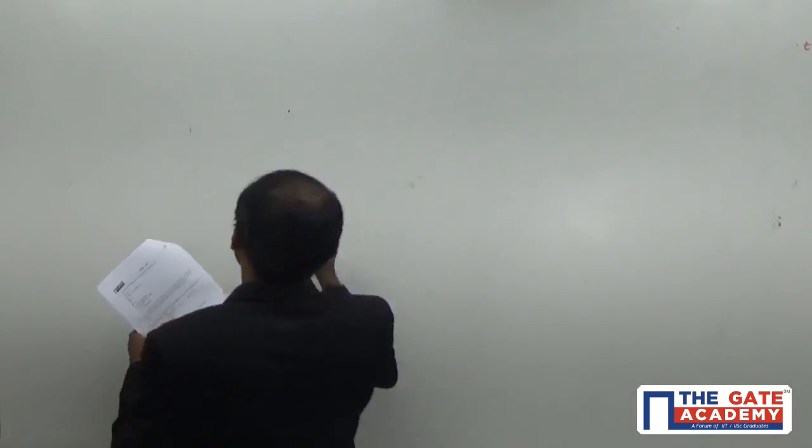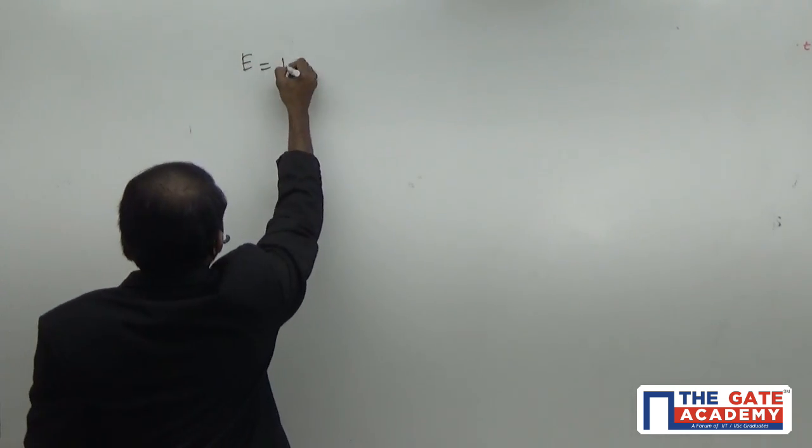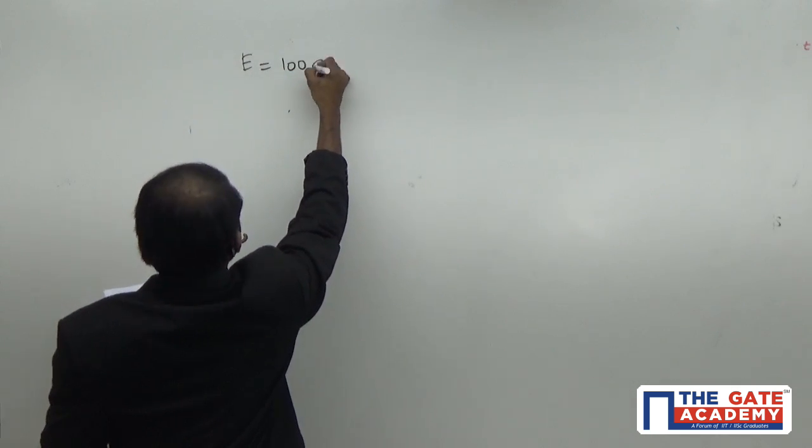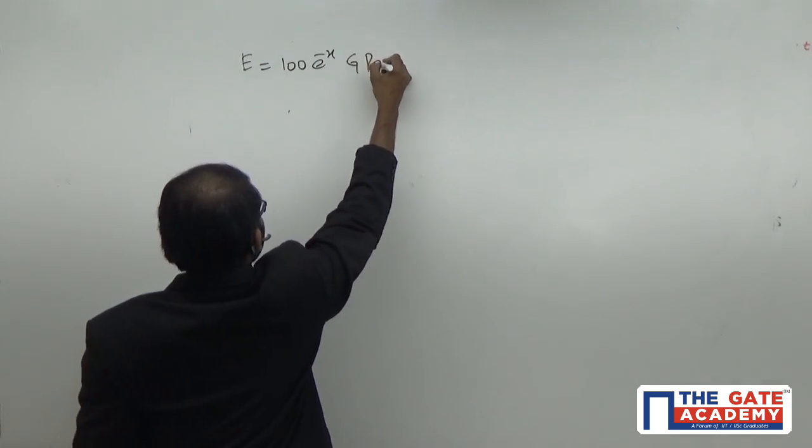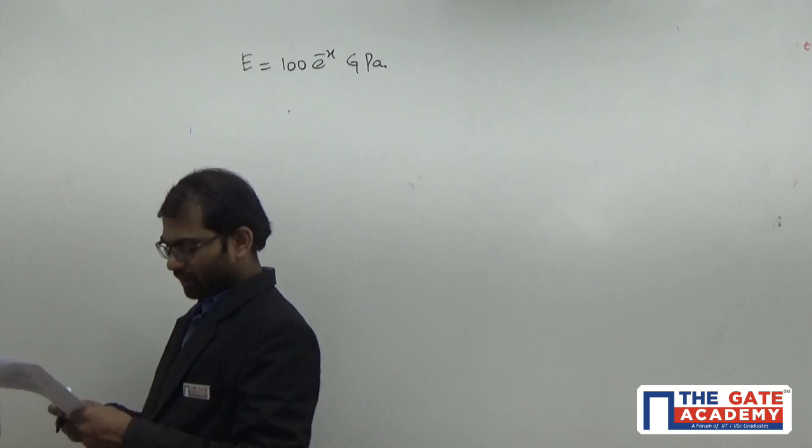This is a question from strength of materials. Find the deflection of the rod given that Young's modulus varies along the length as E equals 100 e to the power of minus x gigapascal. The rod's modulus is varying along the length, 100 e power of minus x gigapascal.